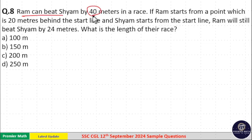Ram can beat Shyam by 40 meters in a race. If Ram starts from a point which is 20 meters behind the start line and Shyam starts from the start line, Ram will still beat Shyam by 24 meters. What is the length of the race?